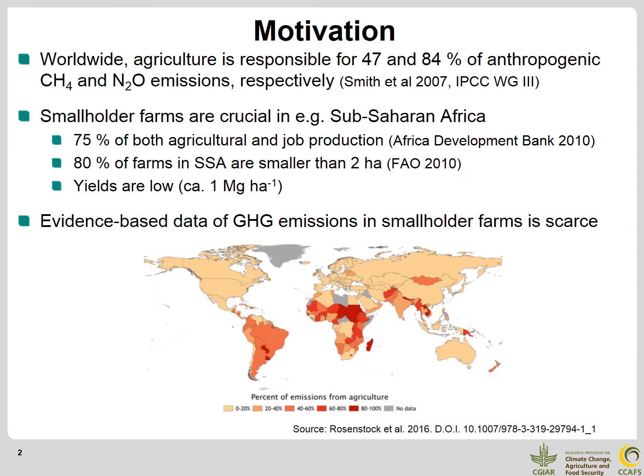Agriculture contributes greatly to anthropogenic emissions of methane and nitrous oxide at the global scale, both of which are strong greenhouse gases. Although associated with low yields, smallholder farms are the predominant form of agriculture in developing countries, contributing to three-quarters of food production in Sub-Saharan Africa. In this region, agriculture may contribute up to 80% of the overall greenhouse gas emissions.